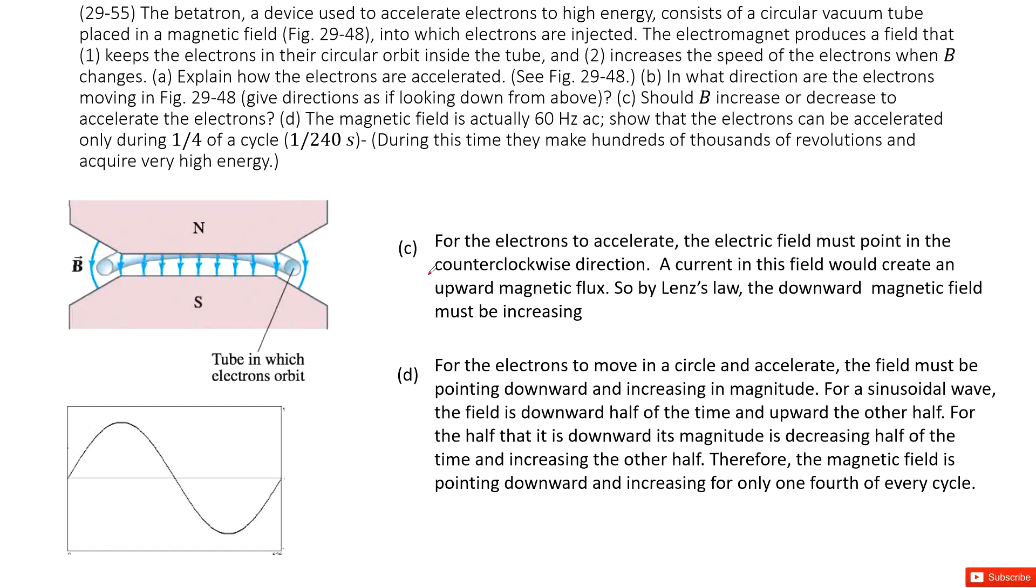we first look at the magnetic field increase. If magnetic field increases, the magnetic flux in this circle will increase. The induced current will produce a magnetic field to compensate it. This is Lenz's law. The induced current produces magnetic field up. You can use the right-hand rule to determine the induced current which flows this way.